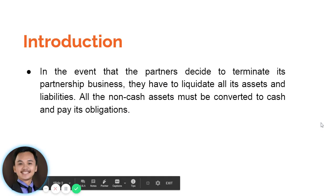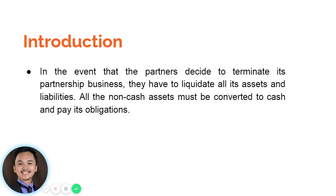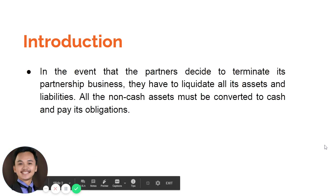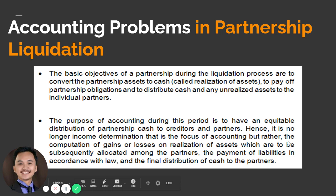When we talk about partnership liquidation, it is the winding up of the business. It is done usually by selling the assets, paying the liabilities, and distributing the remaining cash to the partners. A business which is in the process of converting its assets into cash and making settlement with creditors is said to be in the liquidation process. In the event that the partners decide to terminate the partnership business, they have to liquidate all its assets and liabilities. All non-cash assets will be converted to cash and used to pay obligations. The focus in partnership liquidation will be the distribution of the remaining cash to the partners and to other stakeholders like the creditors.